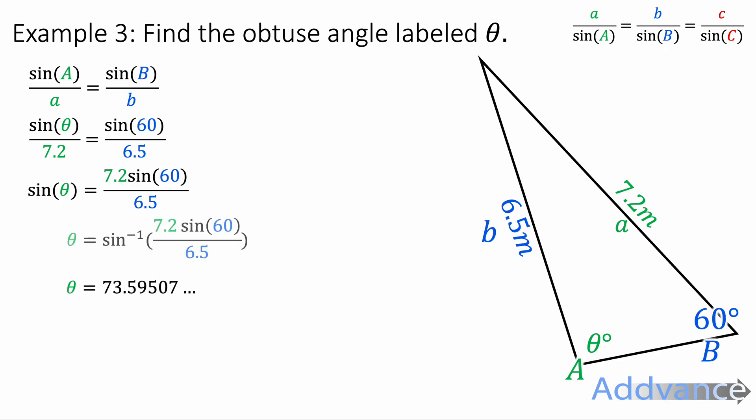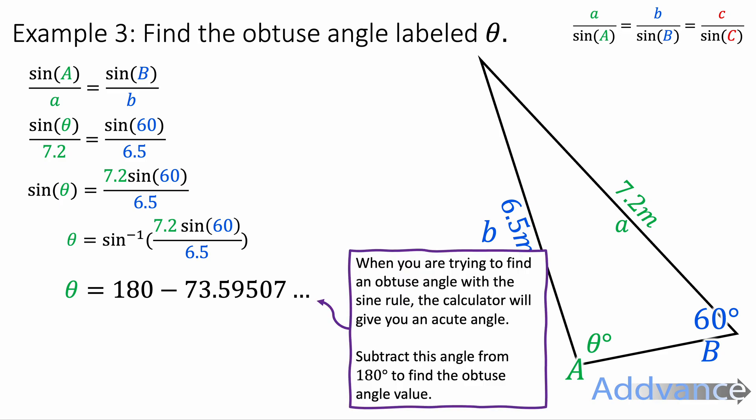Typed into a calculator, we get 73.59 degrees. However, that is not an obtuse angle — that is what it would be if it was an acute angle. To make it into an obtuse angle, we do 180 minus 73.59. When finding an obtuse angle with the sine rule, the calculator gives you an acute angle, so we subtract this angle from 180 degrees to find the obtuse angle value.